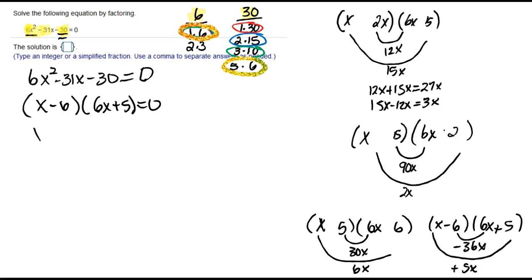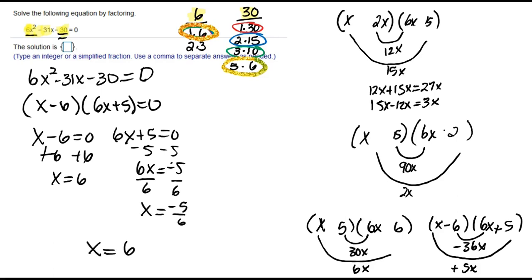Now we're going to set each factor equal to 0 and solve. Add 6 and get x equals 6. Subtract 5, 6x equals negative 5, divide by 6, we have x equals negative 5/6. Those are our two solutions.